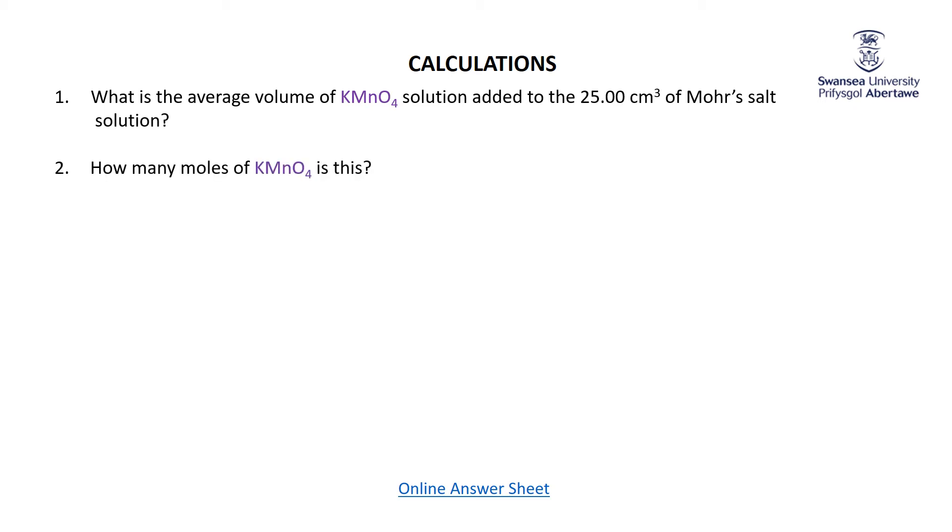Once you've got the volume, knowing that the concentration of the potassium permanganate solution was 0.0200, you can get the number of moles of potassium permanganate. You can then use the equation that is right at the start: how many moles of Fe2+ will react with this many moles of KMnO4? Now, how many moles of Mohr's salt does this correspond to?